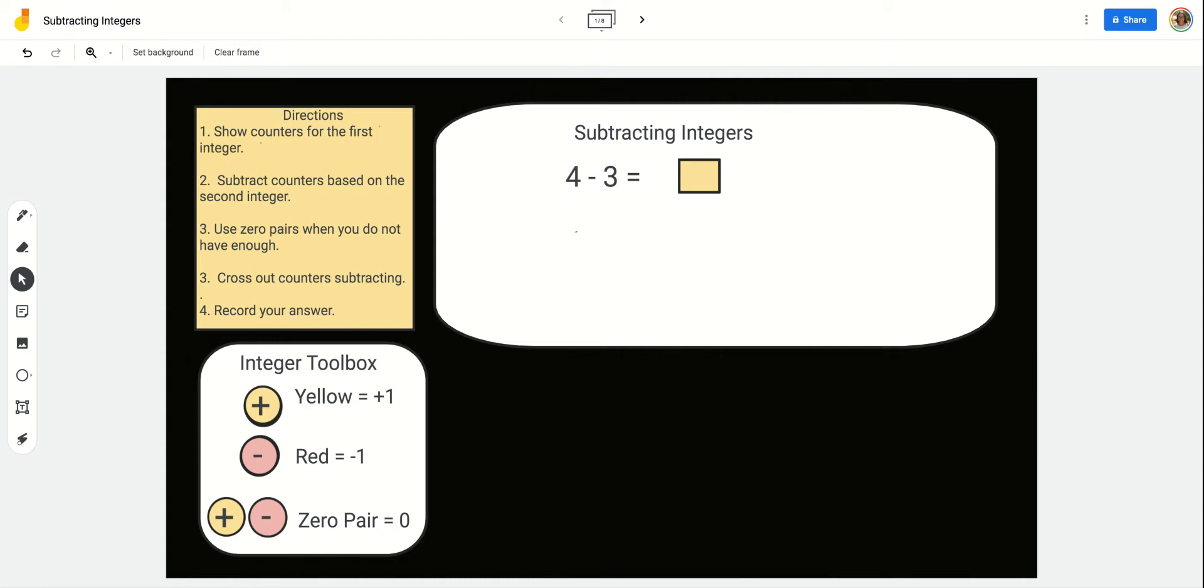In our first problem, we have 4 take away 3. We know this 4 is positive, so we can use our integer toolbox to drag out 4 positives. Now, we're going to look at our second integer and subtract. We are going to take away 3. We have enough positives to take away, so we don't need to do anything except cross out these 3 positives. And we're left with 1 positive.